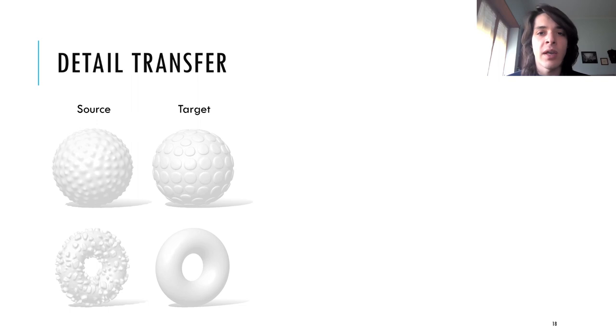Here we show two examples where we try to transfer details between textured shapes belonging to the same class. In the first row, we try to transfer the details on the first sphere to the second textured sphere by ignoring its texture.